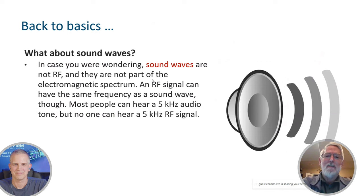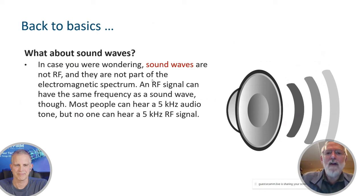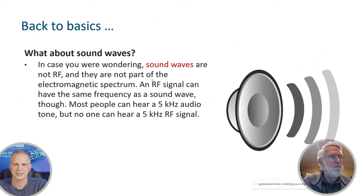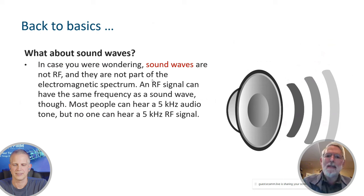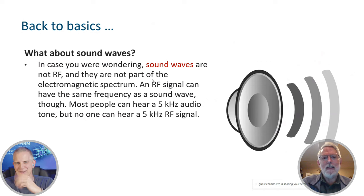Sound waves can have the same frequency as some radio waves — they go up to 20 kilohertz. Most people can hear a five kilohertz audio tone, but nobody can hear a five kilohertz RF signal. The military has used frequencies around five kilohertz for communication with submarines. Those were electromagnetic signals, not sound waves, even though they share the same frequency. Our ear can process acoustic signals, but it cannot process electrical signals — that's why we can't hear them.